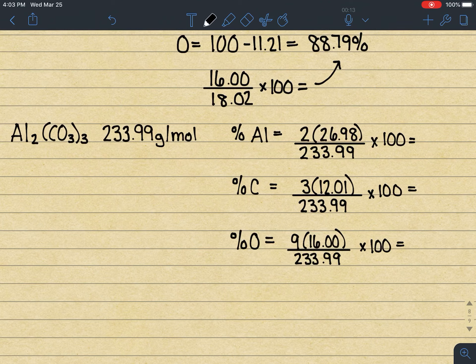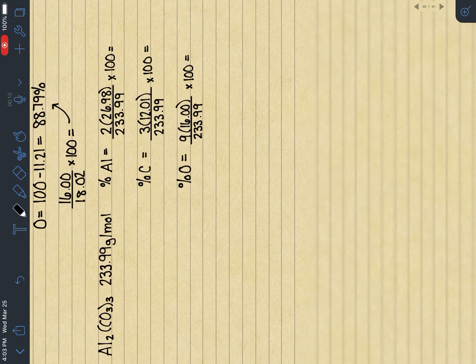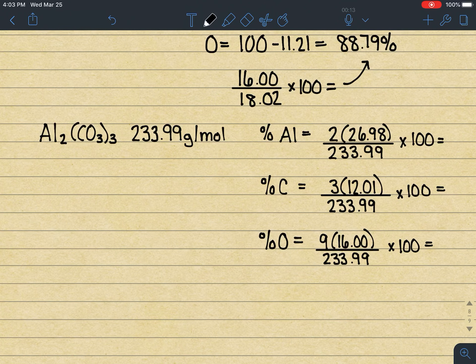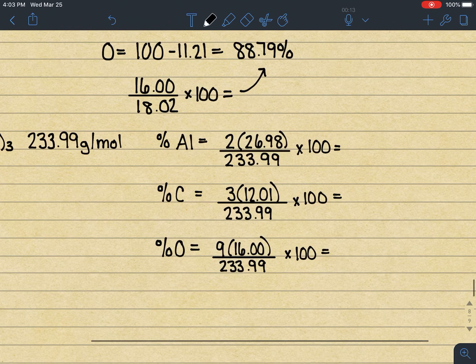The total mass of aluminum carbonate is 233.99 grams per mole, and the percent of aluminum would therefore be calculated by taking 2 times 26.98 divided by that molar mass times 100. And I'm going to do that really quickly on my calculator. And I get a percentage of 23.06.